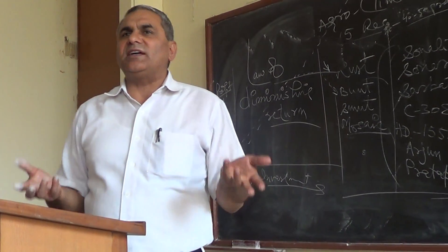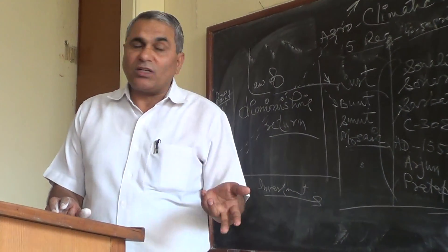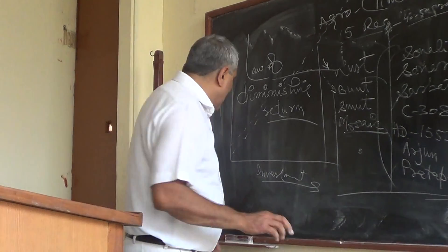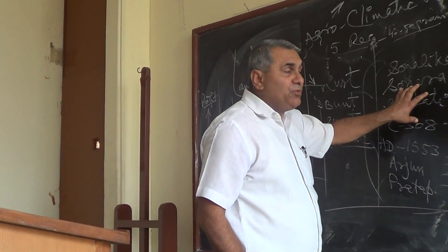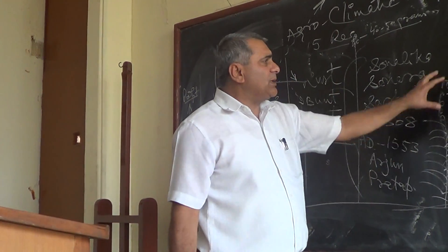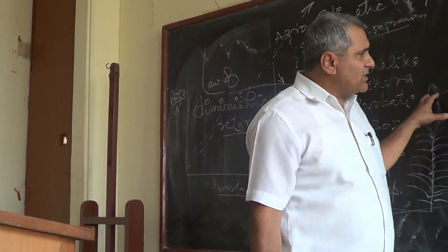It requires less investment in terms of water. This is basically the wheat growing area. These are the high variety seeds of the wheat. These are the diseases of the wheat. This is the concept of the dwarf seed.